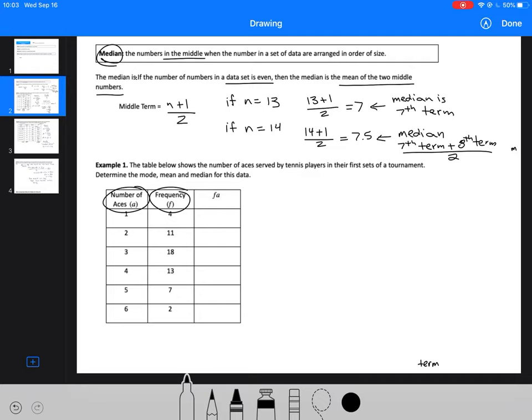If you have four tennis players hitting one ace, that's four aces. We've got 11 people hitting two aces, so we've got 22. 18 and three, similarly all the way down. 13 and four, seven and five. And then we've got six and two, so 12.